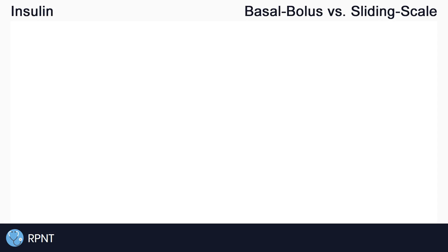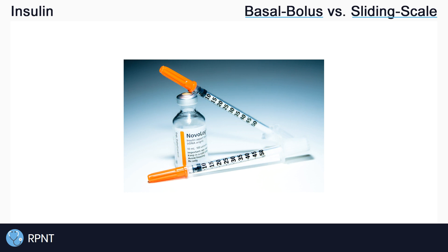Hi everyone, this is Ryan from RPNT.ca and today we're going to be talking about the two different types of insulin orders. You can use the timestamps in the video description to jump ahead. In general, we have basal bolus insulin orders and sliding scale insulin orders. But first we'll cover a quick review of insulin and diabetes.